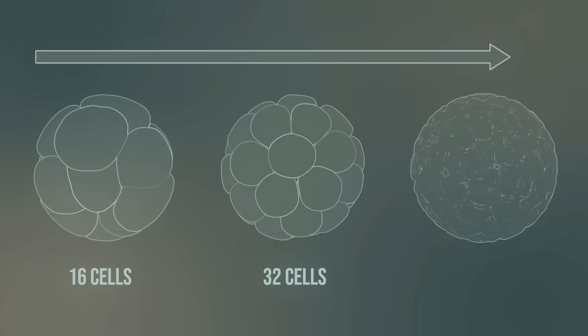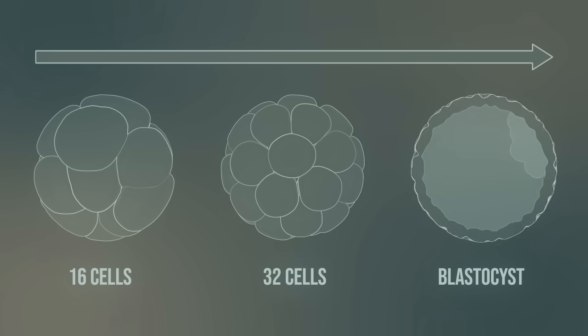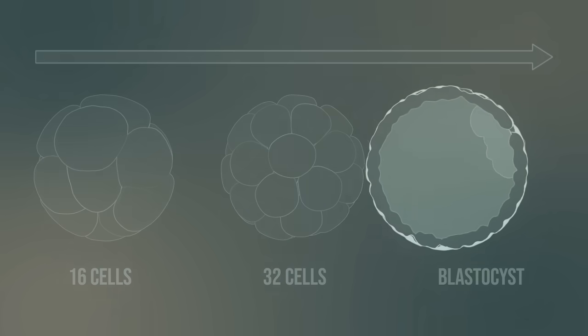Finally, the blastocyst is formed. The blastocyst consists of a fluid-filled cavity, the cells of the embryoblast, and the trophoblast. The embryoblast is the initial structure of the new human being, whereas the trophoblast is the origin of placenta and membranes.